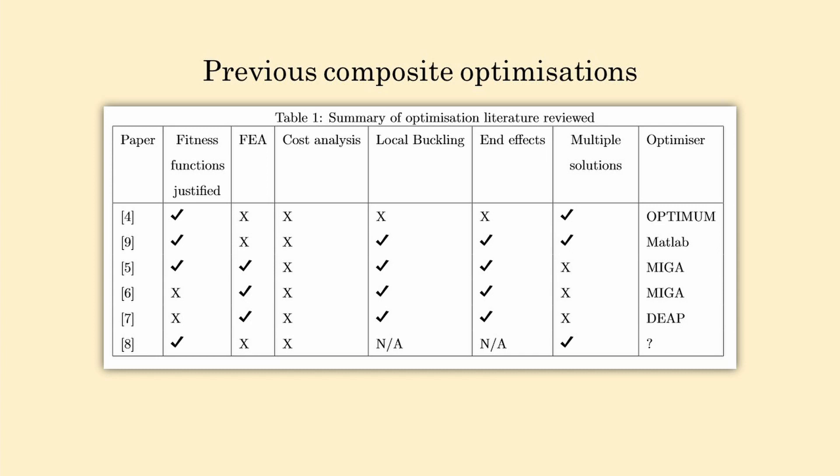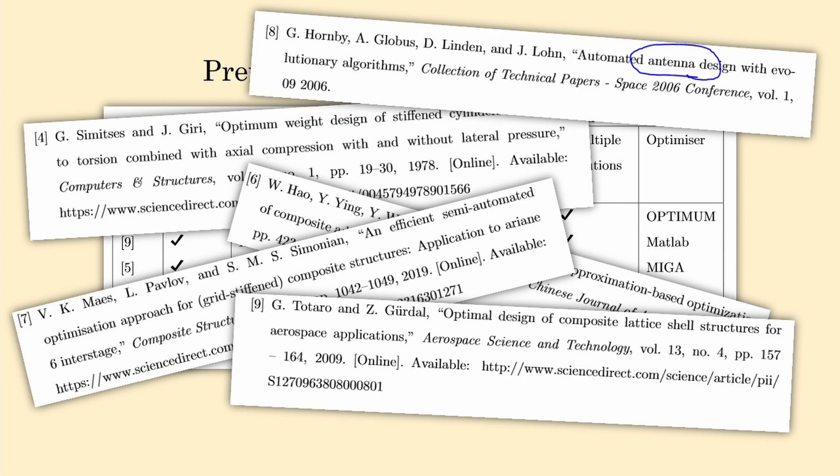The uses of genetic algorithms for spacecraft are varied, and my literature review reflected this. I found that a lot of the research fails to analyse the cost of solutions and their optimisation, which was important for my area of research. I was most excited by the use of genetic algorithms for the Ariane 6 interstate structure and the optimisation of small antennas.